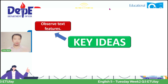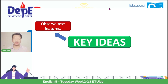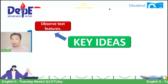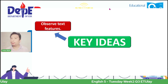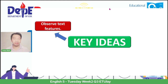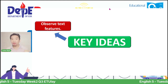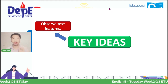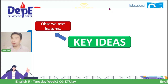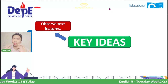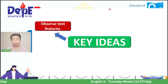Number one: observe the text features. What do we mean by observing text features? When we read something, there is a title. So from the title alone, we can already know what a text or story is about. Therefore, when you observe these features, it is important that when you read a story, you really start with the title—because when you understand the title, you will know what the idea of the story is.